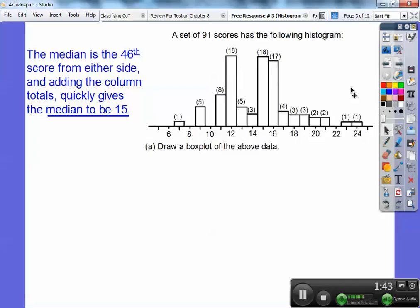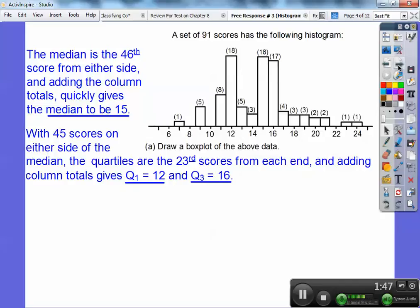And then your quartiles, you guys, is we're going to find the median of the lower half. So the median of the lower half with 45 scores on either side. We do not count the median as one of the scores. So with 45 scores on either side, the quartiles end up being the 23rd score from each end. So if I count in 23 on this end right here, I find out that quartile one is at 12. And then quartile one, I count in 23 at this end. Quartile three is at 16. Do you remember doing that?